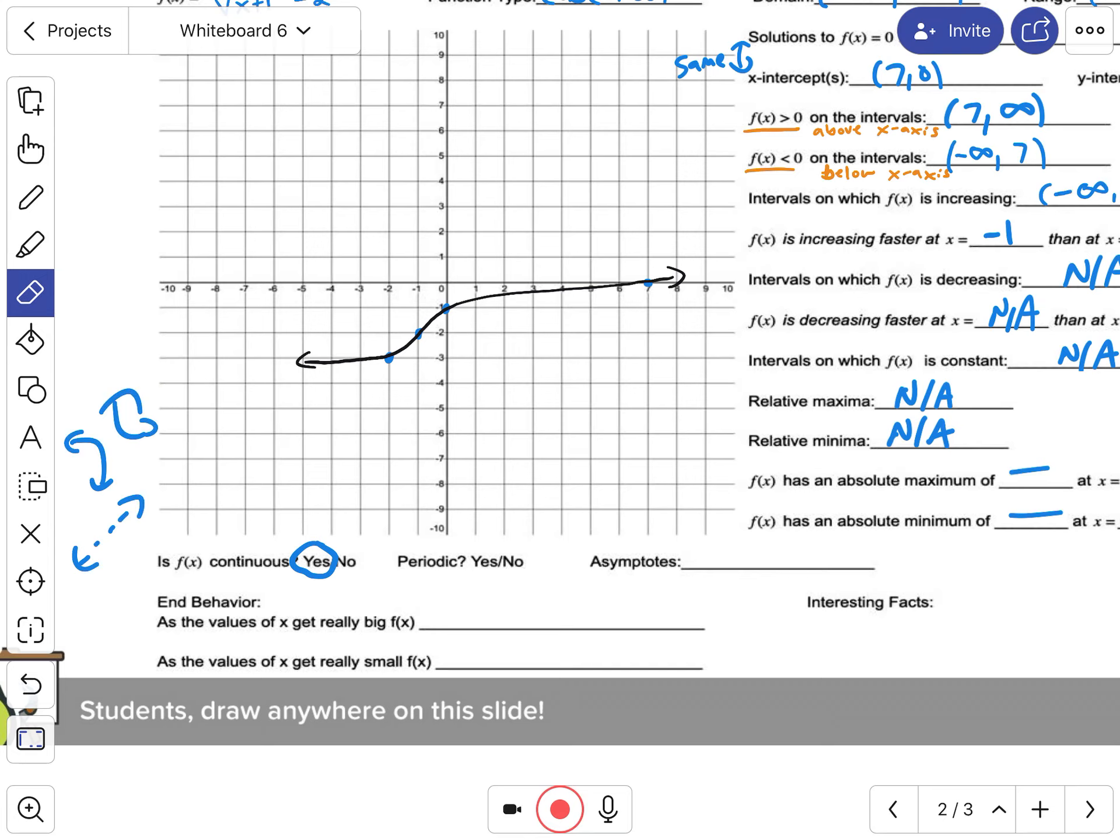The other one is periodic. So we've seen the sine wave and cosine wave before. Periodic is like a cycle—it just continues over and over and over. But this graph is not going to continue this shape. It's just going to go up and right, down and left forever. It's not going to cycle up and down, so it is not periodic. Nope.